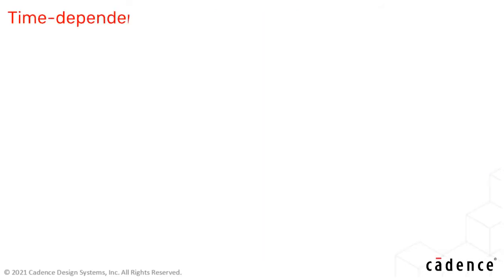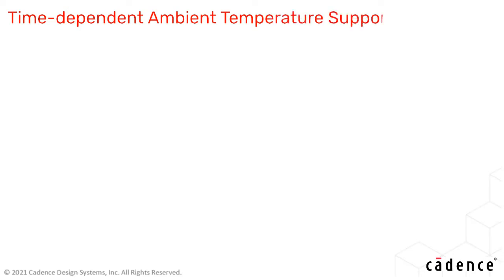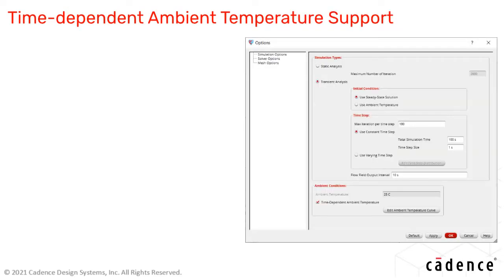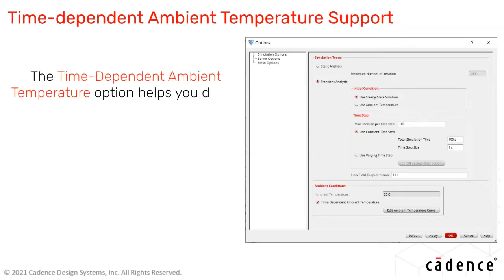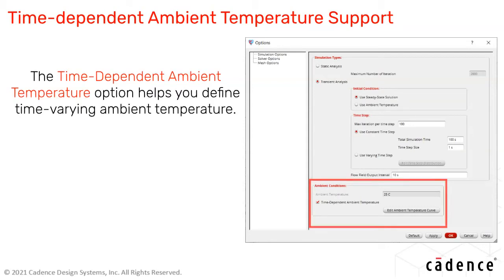You now have the option to define time-dependent ambient temperature in the Celsius fluid flow simulation. Instead of defining a constant ambient temperature for the entire simulation, you can now define a time-dependent ambient temperature to model scenarios where the ambient temperature can vary with time.